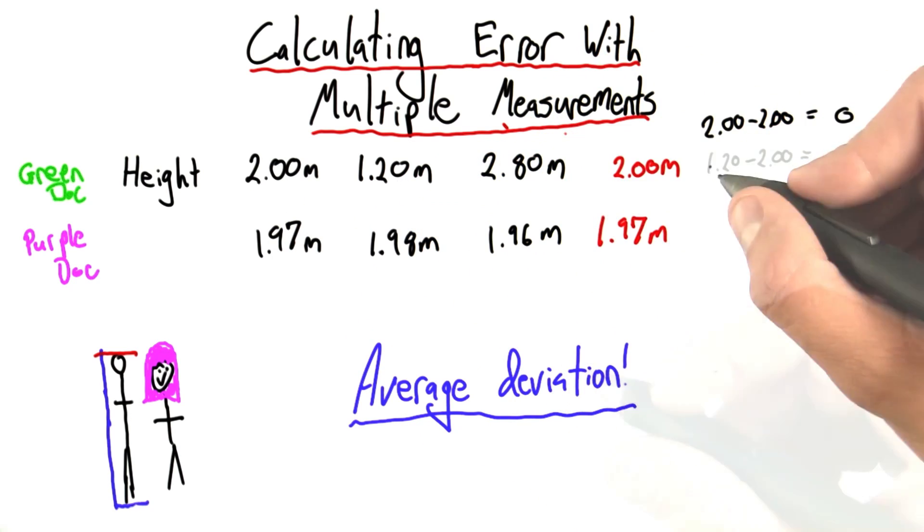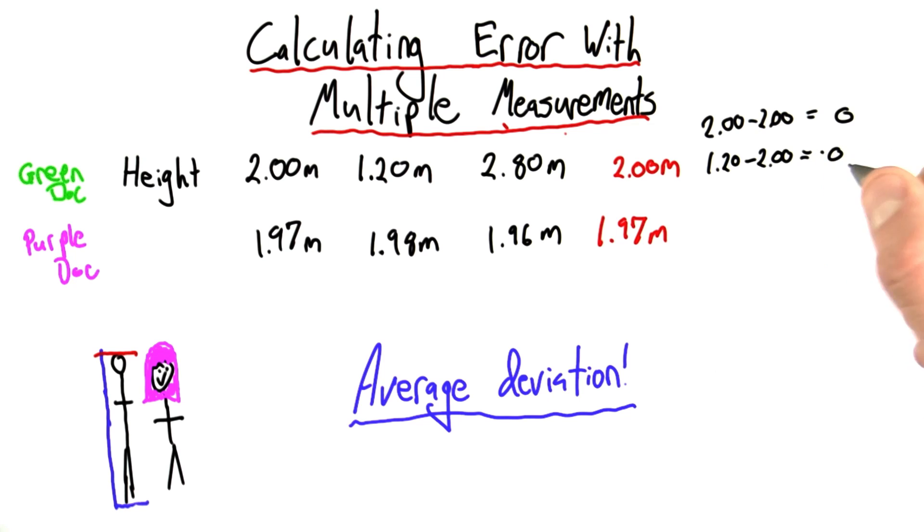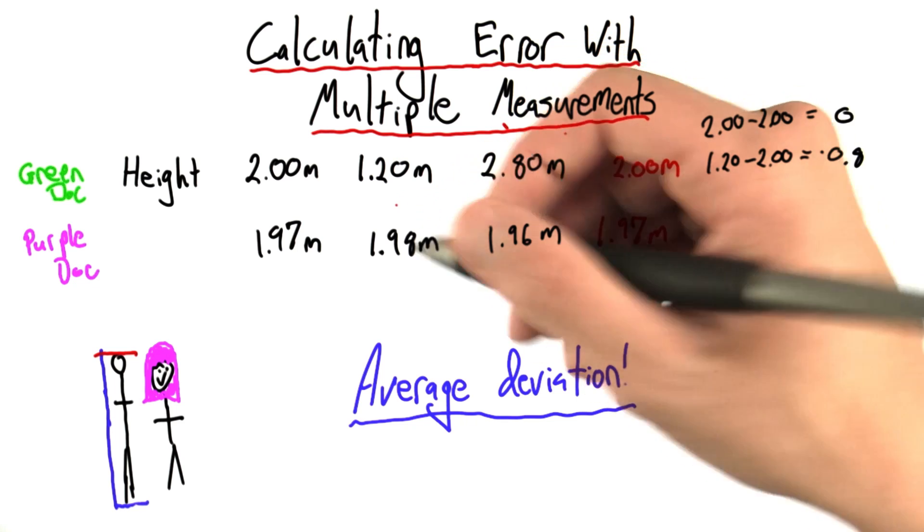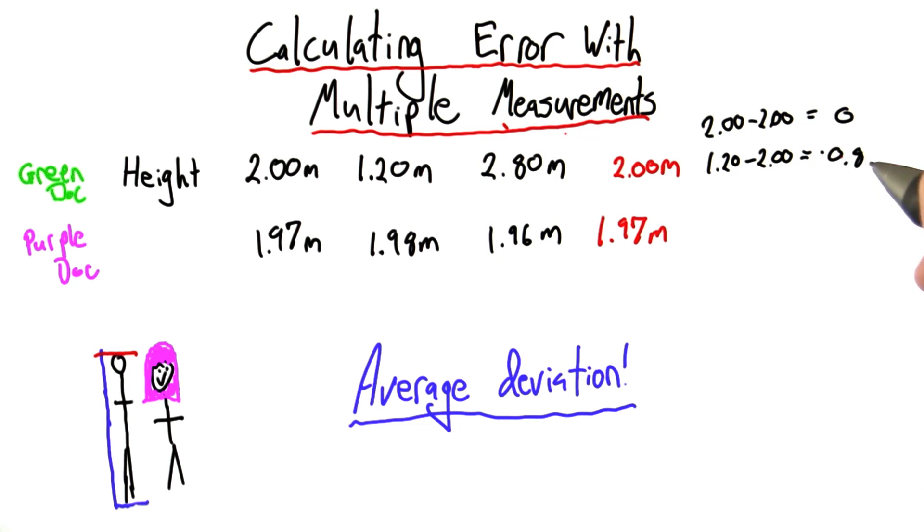What about this guy, 1.2 meters? Well, 1.2 minus 2 is equal to 0.8, negative 0.8, but since I don't really care whether they're overestimating or underestimating, I'm going to always make these numbers positive, which I do by taking the absolute value. So let's just call that positive 0.8.